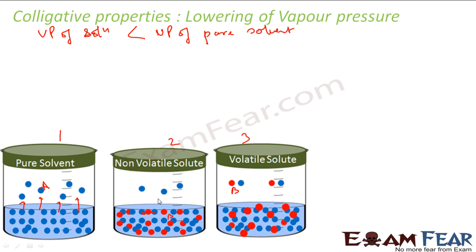In case 1 (pure solvent), there is no one to stop the A molecules from escaping, so many more molecules of A can escape out. But when you add non-volatile solute (case 2), the red B molecules attach to the blue A molecules, and fewer A molecules come out. I'm talking about the ideal case here. In the ideal scenario, the number of A molecules that go to the vapor phase in case 2 will be less than in case 1.